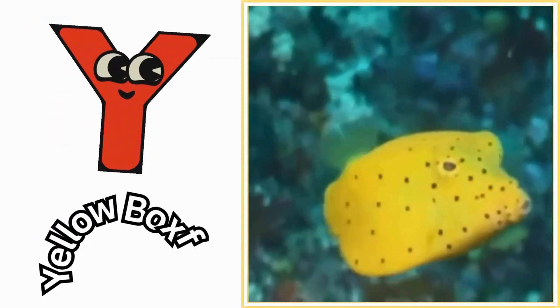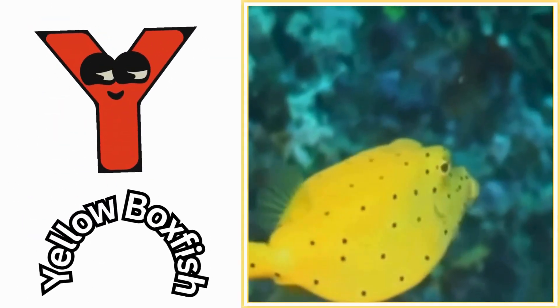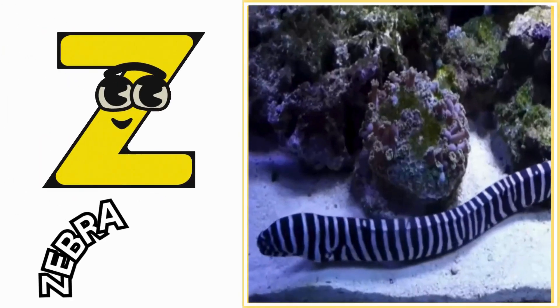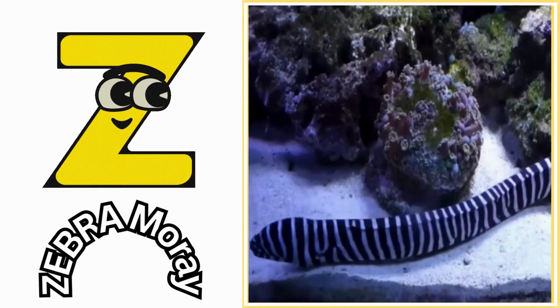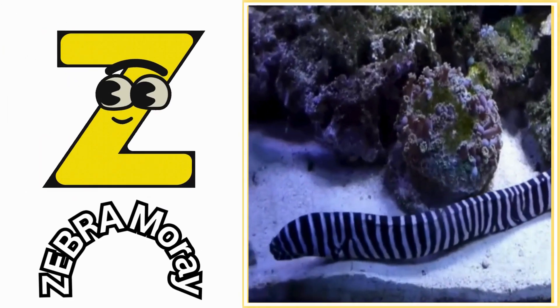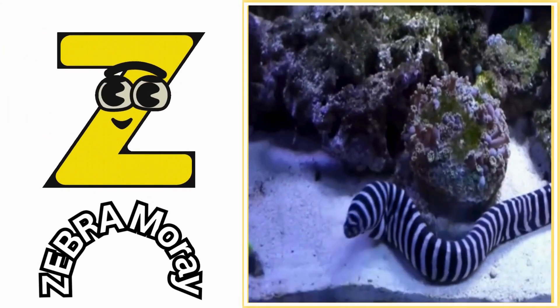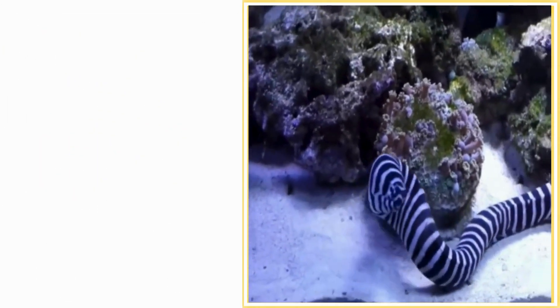Y is for yellow boxfish. Ya, yellow boxfish. Z is for zebra moray. Z, zebra moray.